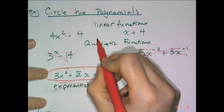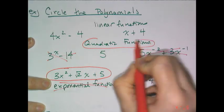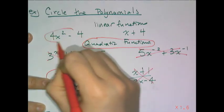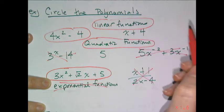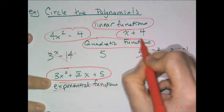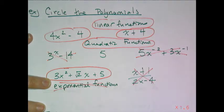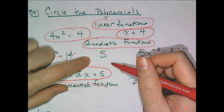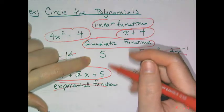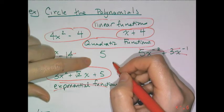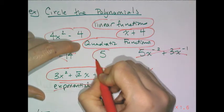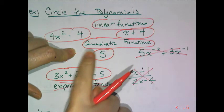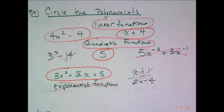Now quadratic functions are polynomials, which means 4x squared minus 4 is a polynomial. Linear functions are polynomials, which means x plus 4 is a polynomial, and that leaves 5. Now 5 actually is a polynomial. It's a super lame polynomial, but it's a polynomial of degree 0. So those are examples of polynomials.